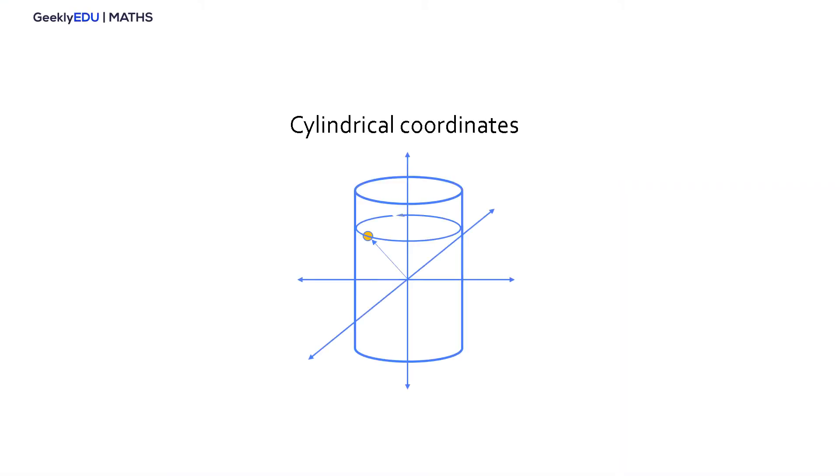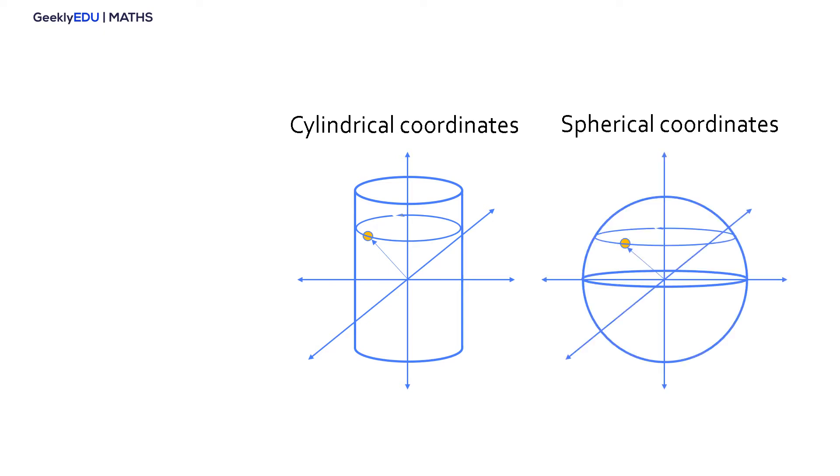Three of the main curvilinear coordinate systems are the cylindrical coordinates, spherical coordinates, and today's topic, polar coordinates.